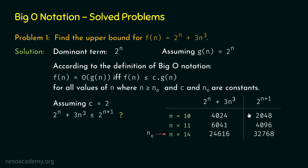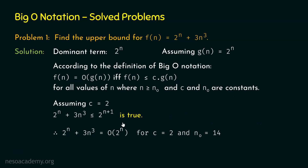For N0 equal to 14, we can observe F(n) is less than C times G(n). Therefore, this statement is true. Hence, 2 to the power n plus 3n cubed is equal to O(2 to the power n), because G(n) is 2 to the power n. This is true for C equal to 2 and N0 equal to 14. Therefore, G(n) equal to 2 to the power n is the upper bound of F(n) equal to 2 to the power n plus 3n cubed. With this, we are done with problem number 1.